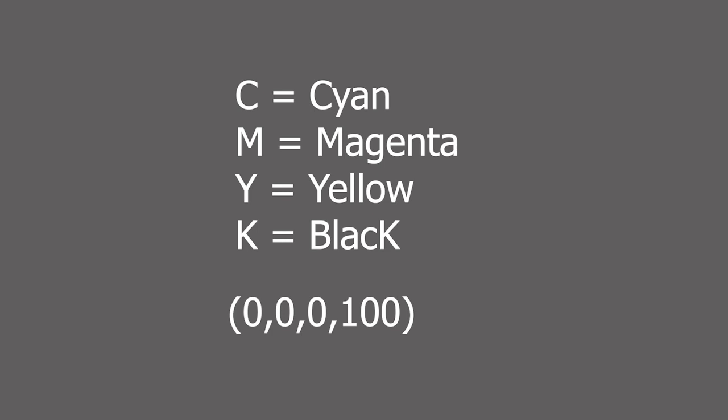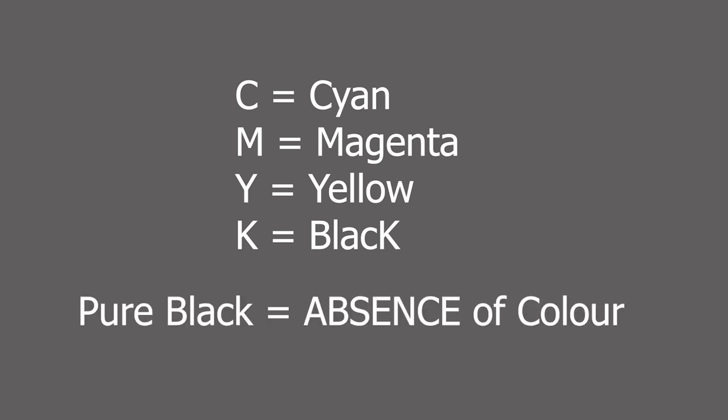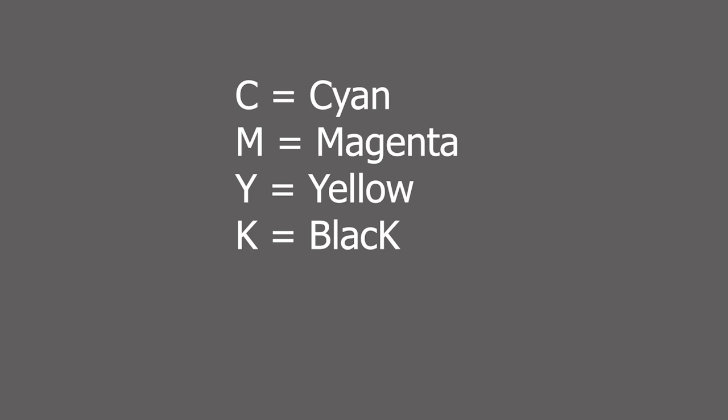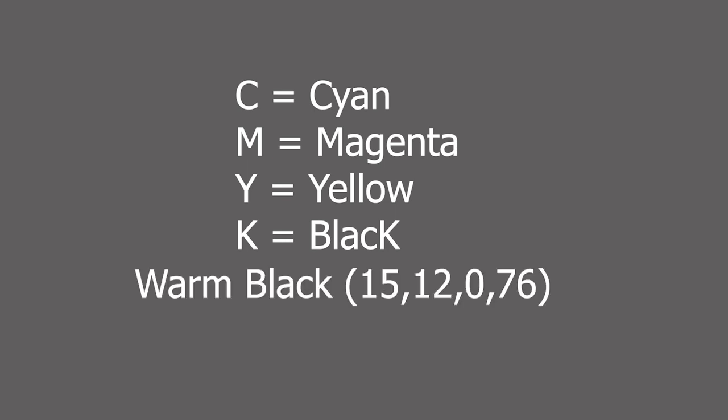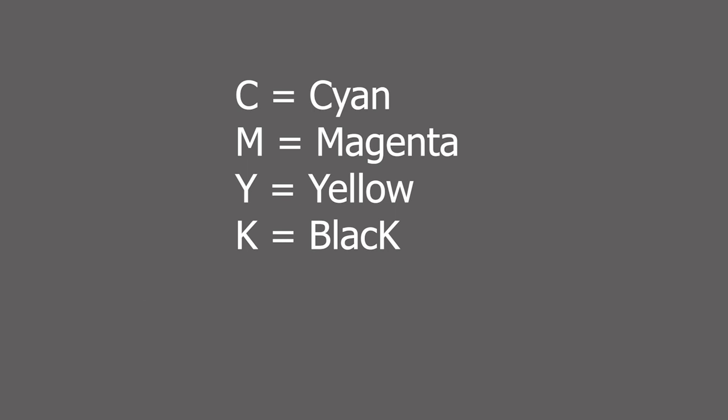But now we want to see if that's actually true. Just so you know, pure black refers to the absence of color. Rich blacks have some other colors in them to create different shades — whether it be a warm black, a cool black, or an American black, for example. So let's go through some various types of black.